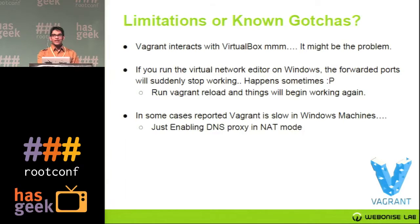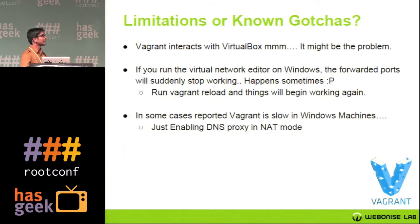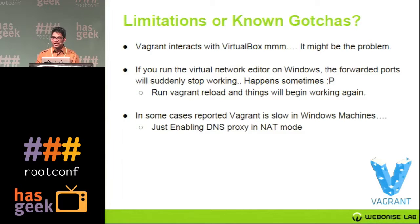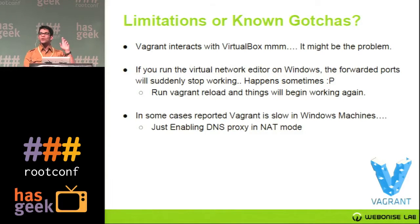There are some limitations still in place while using Vagrant. We are using VirtualBox, so Vagrant interacts with VirtualBox — that might be a problem sometimes, requiring installing a new VirtualBox version. Second, if you are running the virtual network on Windows, the forwarded port will suddenly stop working. That's not a blocker — you just do a 'vagrant reload' and everything starts working fine. Some people have reported that Vagrant is not that great on Windows; the performance is a little bit slow. But you can enable DNS proxy in NAT mode to get quite good performance on Windows as well.